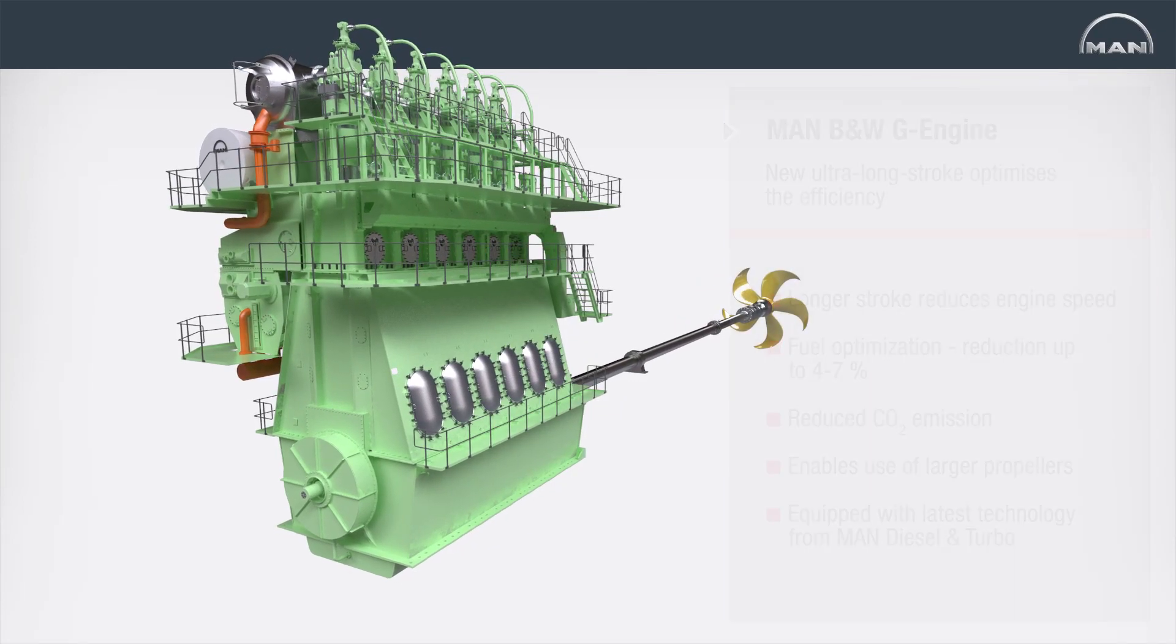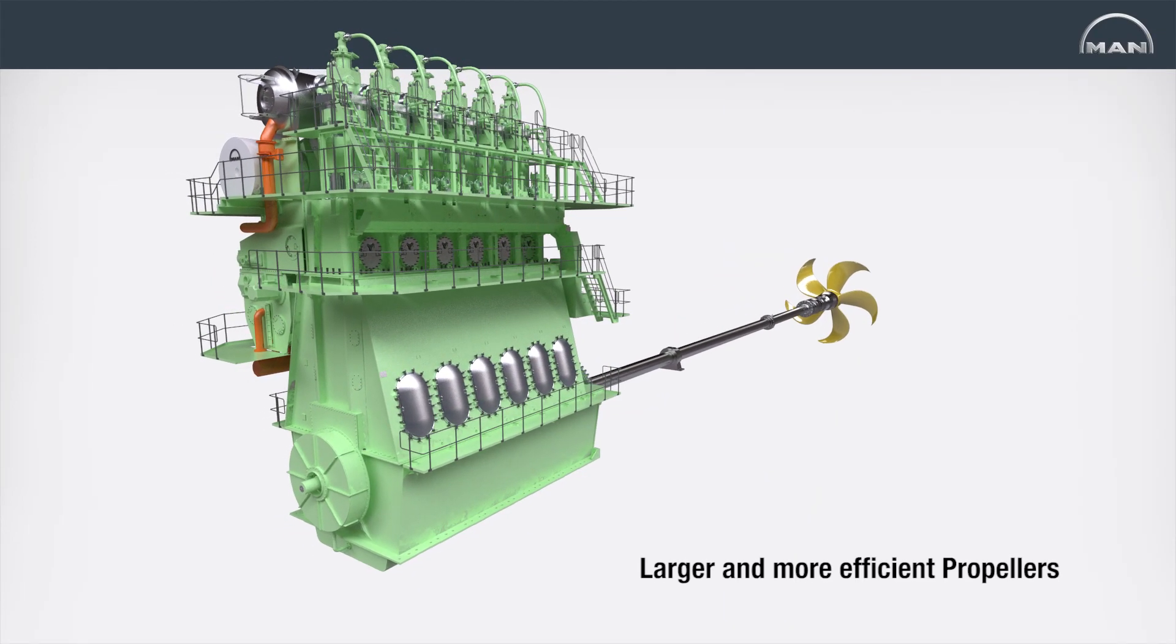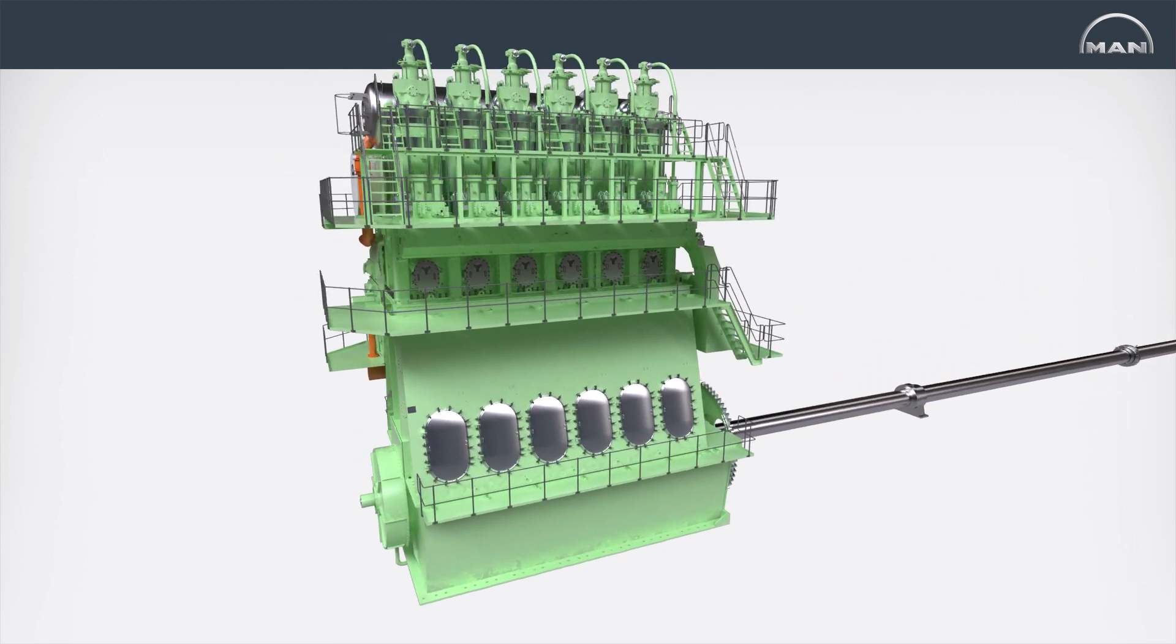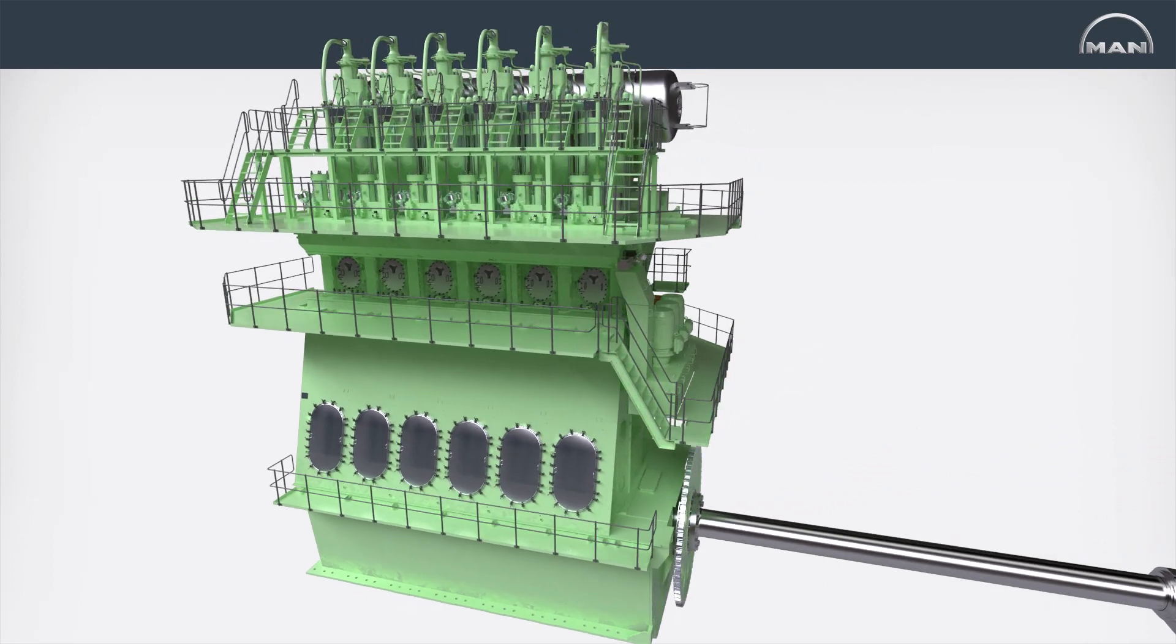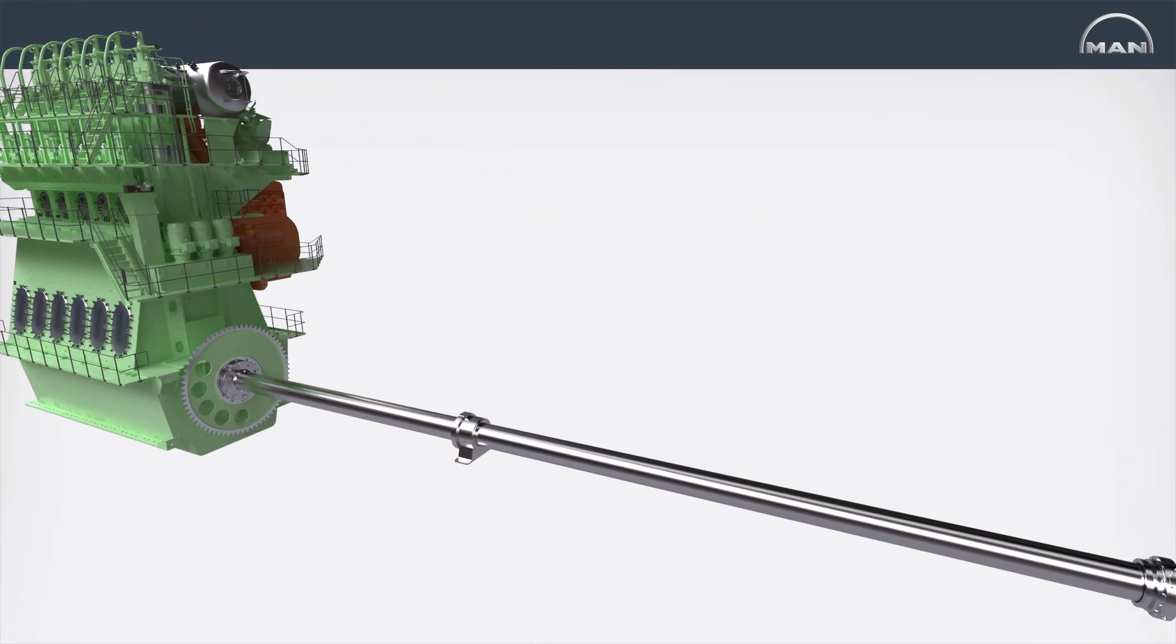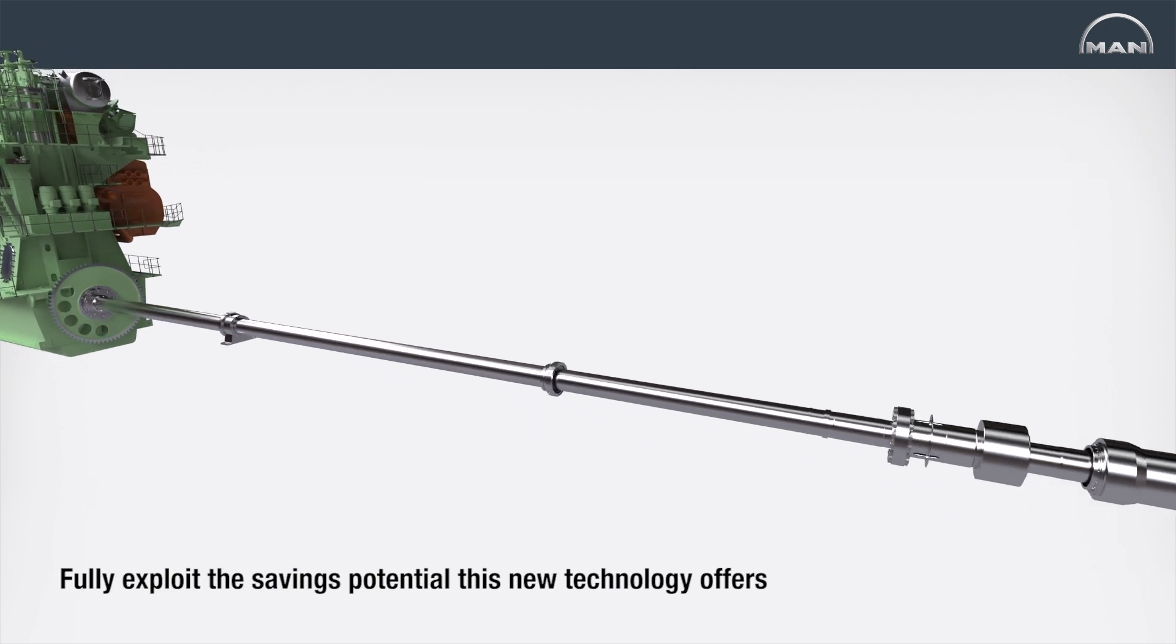Using the latest AFTAL designs that allow the use of larger and more efficient propellers, the new MAN B&W G-Type engines will enable tankers and bulk carriers to operate at even lower speeds and fully exploit the savings potential this new technology offers.